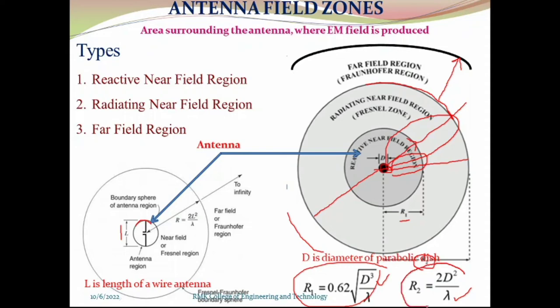We are going to keep our measurement or testing equipment always beyond this distance R2. I will tell why it is happening and what is the necessity of this. In the case of a linear antenna whose length is L, we have taken the formula R = 2L²/lambda instead of D. If it is based on the dimension of the antenna — suppose we are taking aperture antennas like square or circular shape — we have to take the longer dimension. If it is circular, we take the diameter; if it is square, we take the longer side, called L.